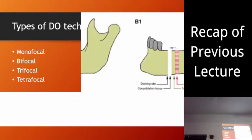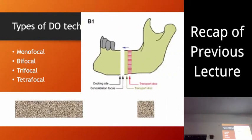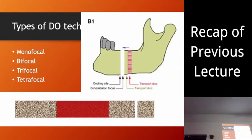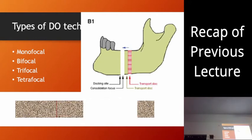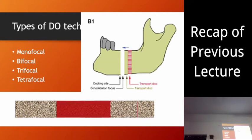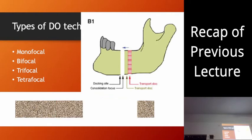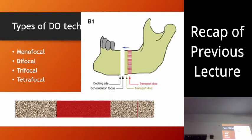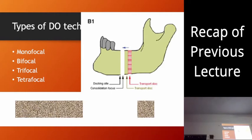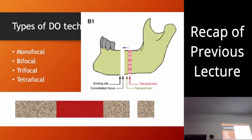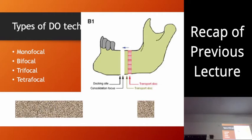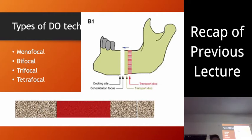Then we have bifocal. In bifocal, what we do is cut a small disc and then pull it apart. We get new bone formation on one side, and when this disc reaches the distal segment we graft that side. So we have two sides where new bone formation occurs — that is bifocal.